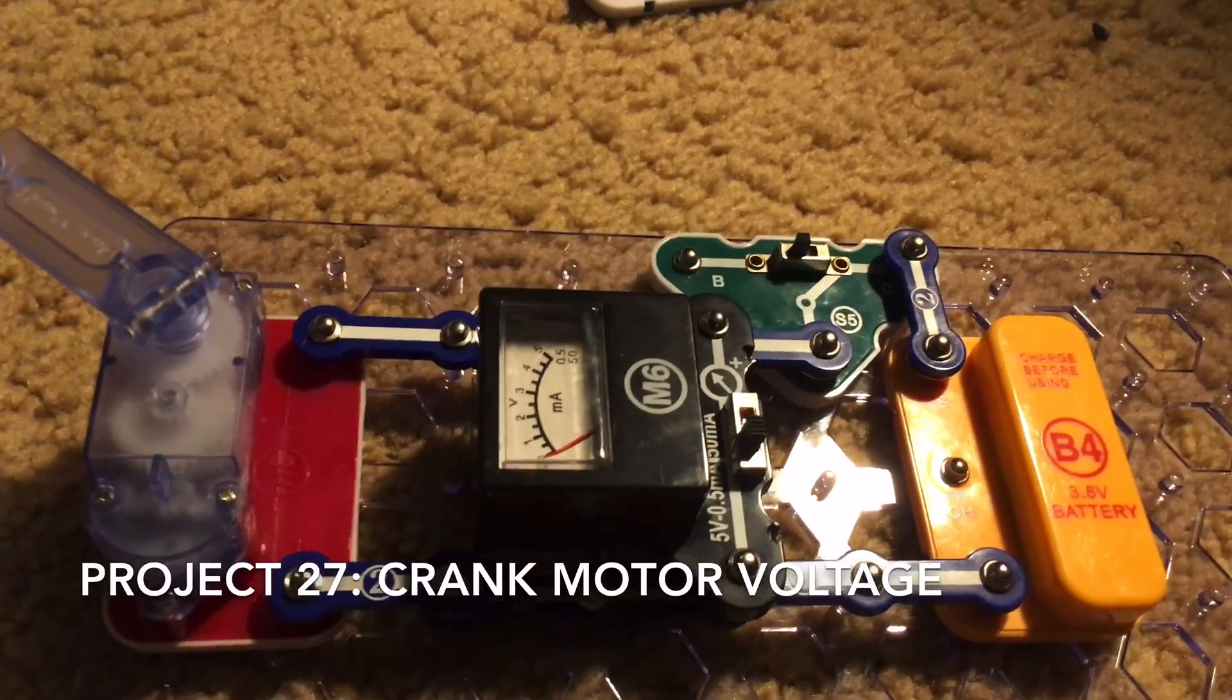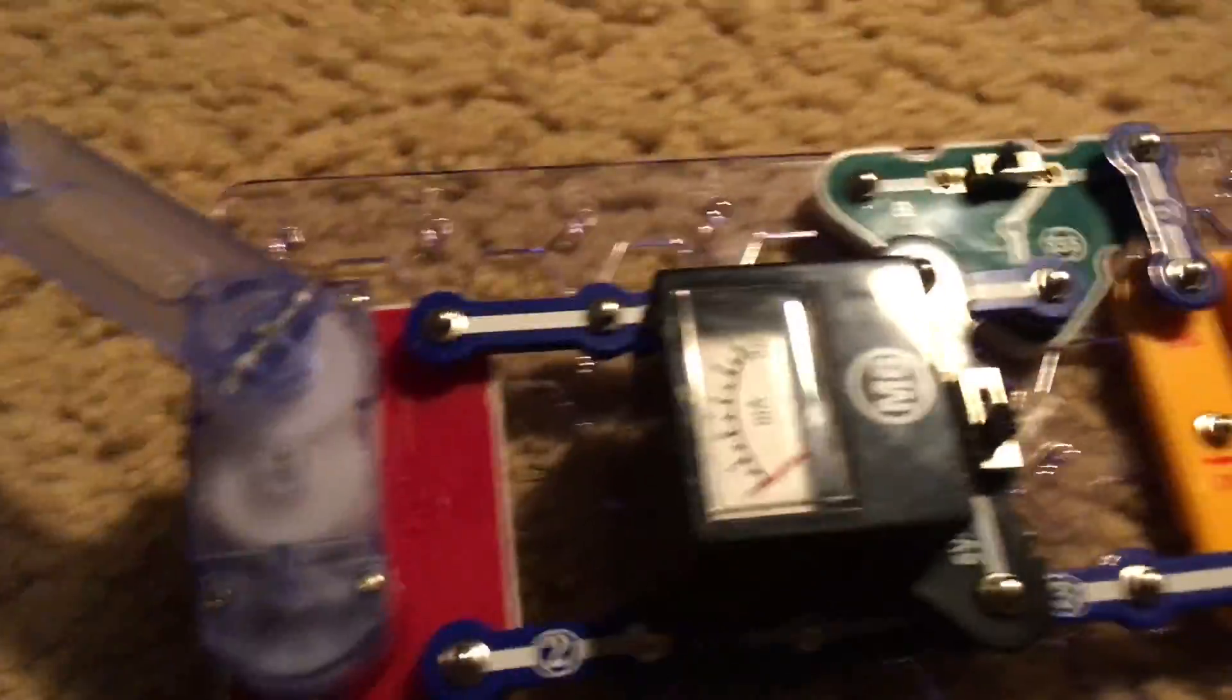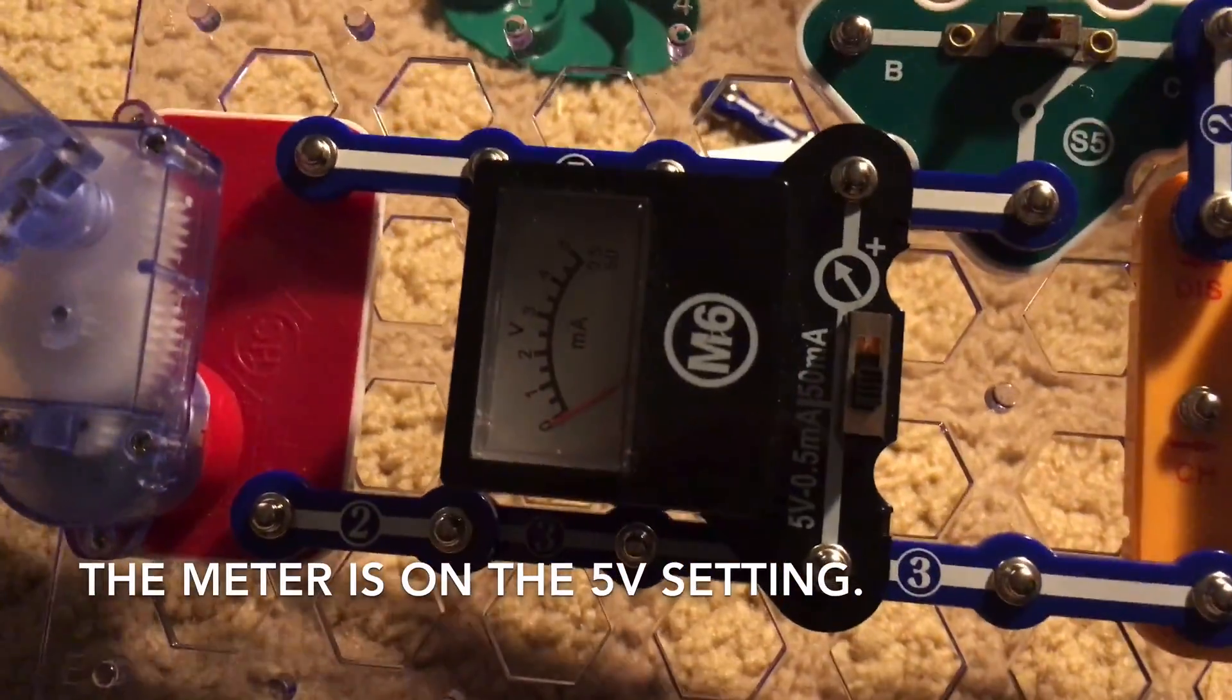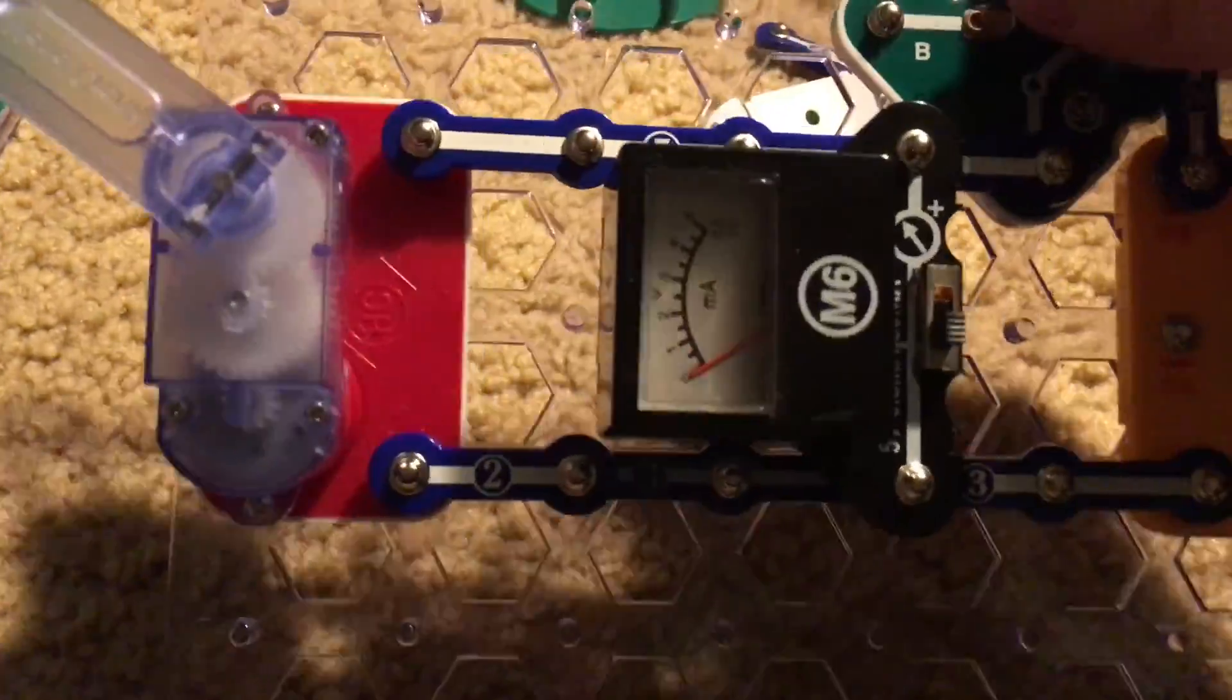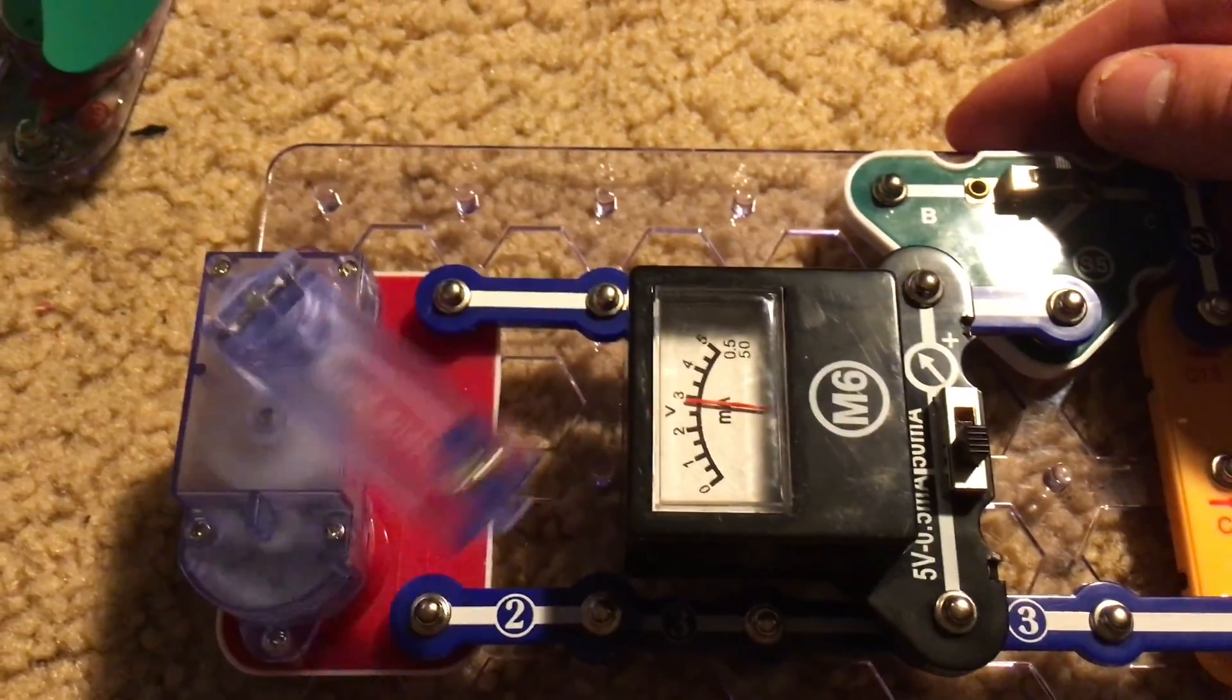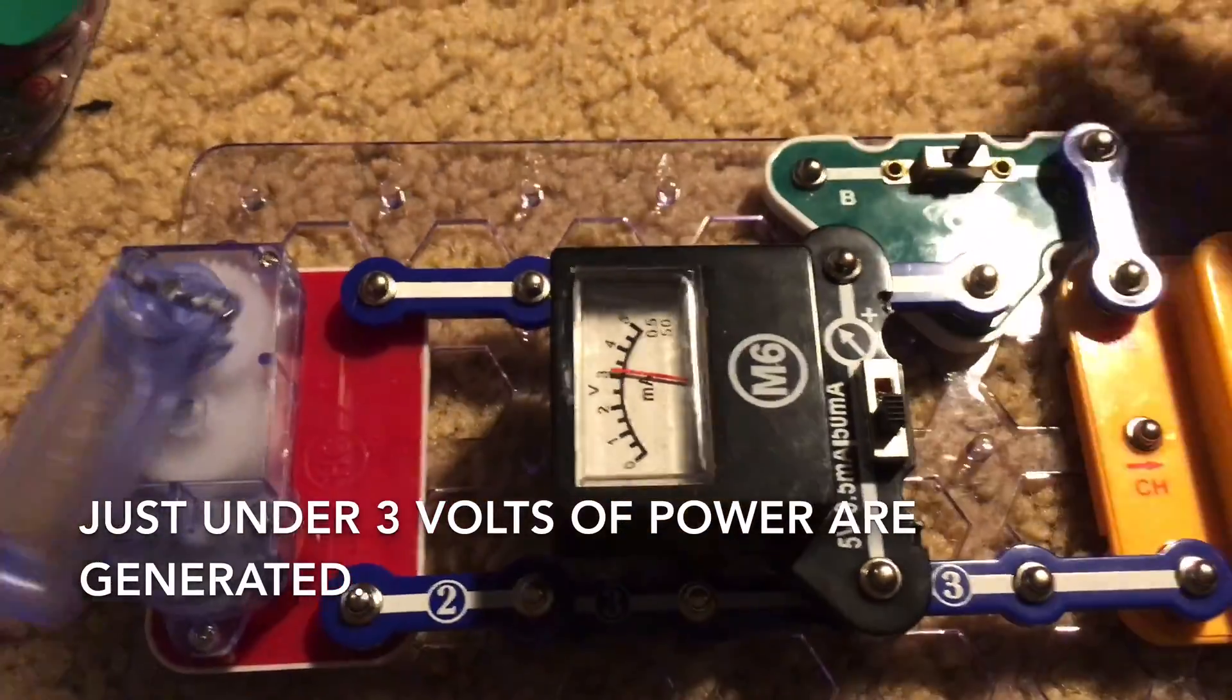We will now study the voltage produced when the hand crank spins. We have the meter on the 5 volt setting and we will move the slide switch to position C. I'll tilt it up so it's easier. When the hand crank spins just under 3 volts are produced.